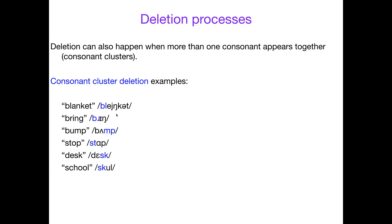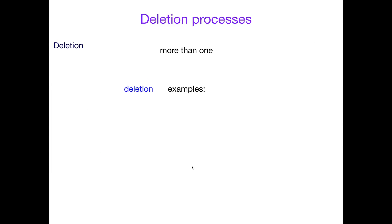When you have consonant cluster deletion, you will delete one or the other. So blanket might become banket or blanket, bring will become bing or ring, bump will become bup or bum, stop will become top or sop, desk will become deck or desk, and school become cool or soul. You just delete one of them—either one can be deleted. If consonant cluster deletion has happened, then one of them goes away.